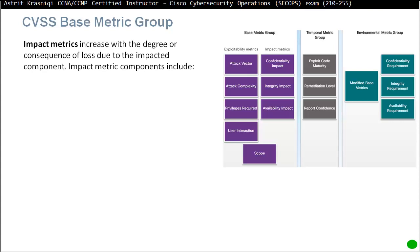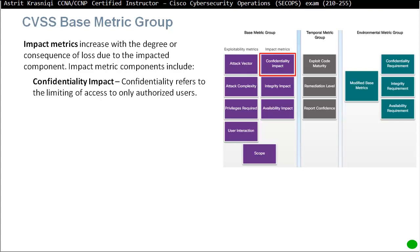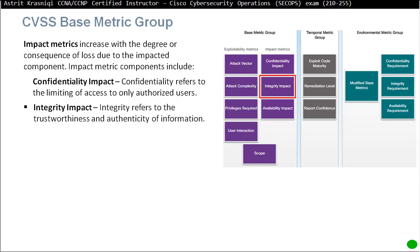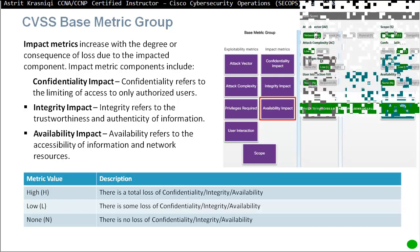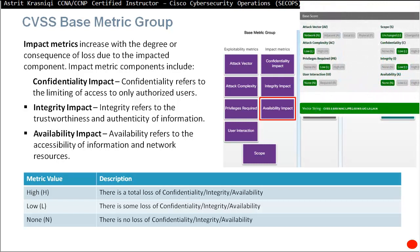Then we have three impact metrics, which measure the degree of consequences of loss due to the impacted components. Confidentiality impact refers to limiting access to only authorized users. Integrity impact refers to the trustworthiness and authenticity of information. Availability impact refers to the accessibility of information and network resources. Each can be rated High — total loss — Low — some loss — or None — no loss of confidentiality, integrity, or availability.